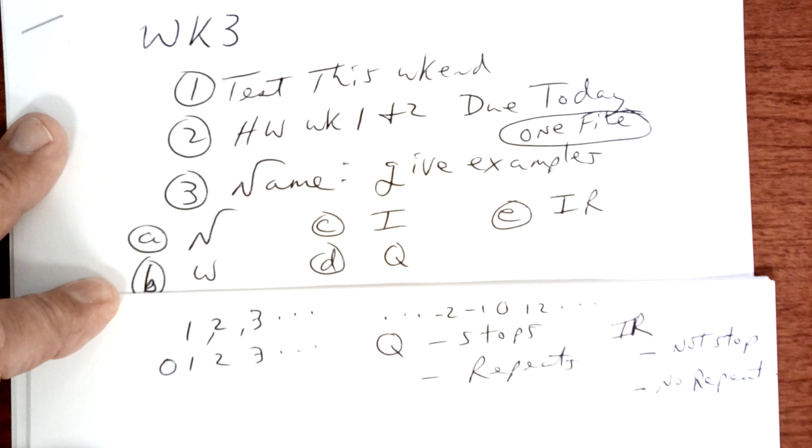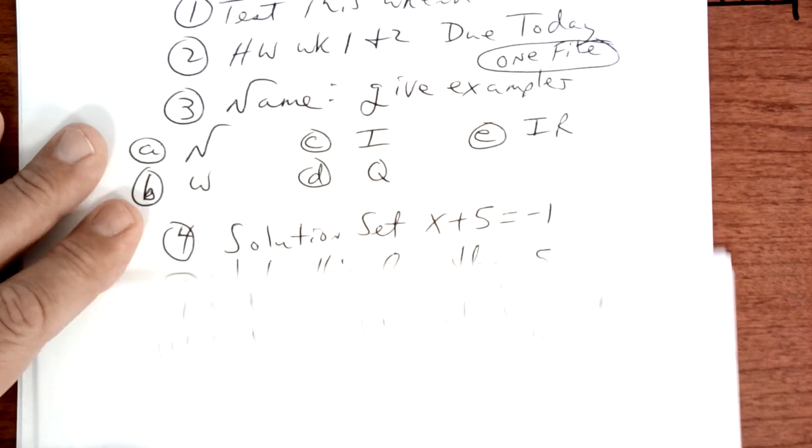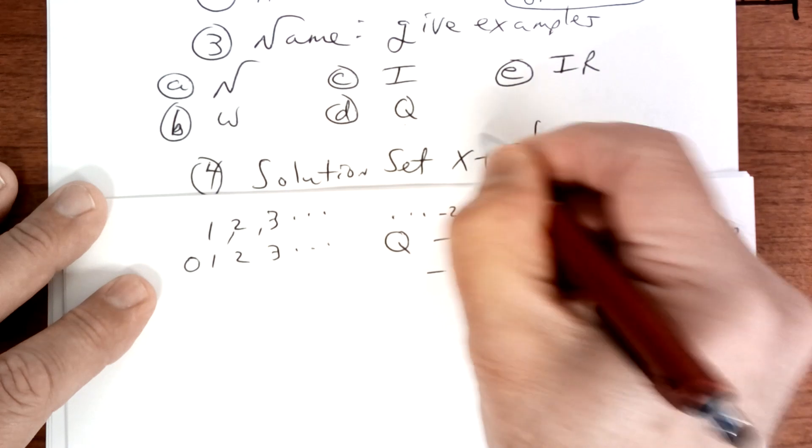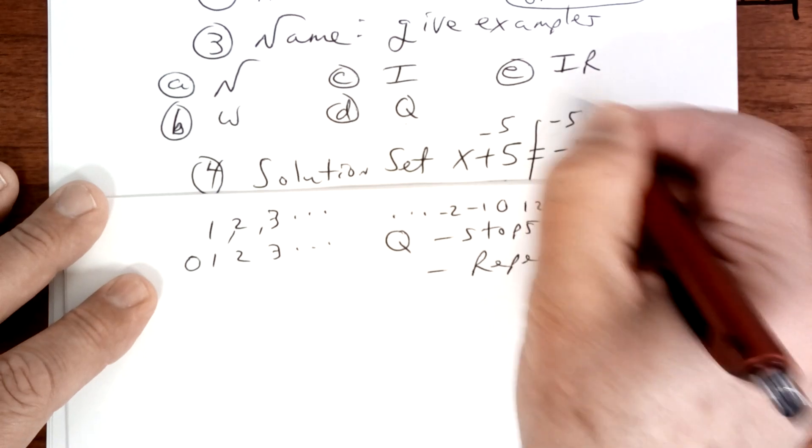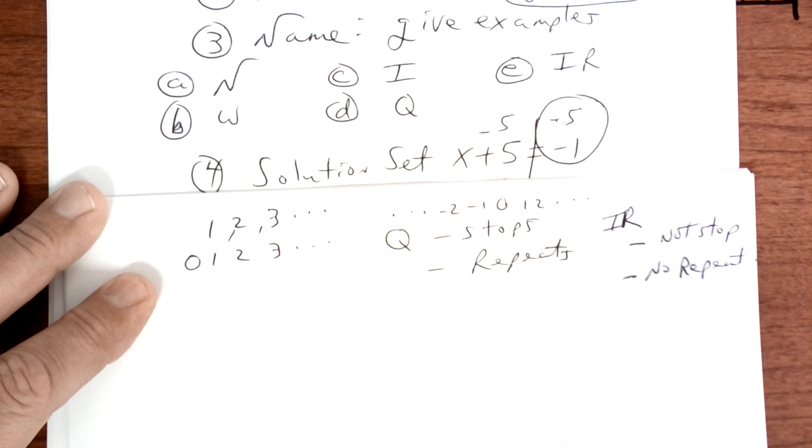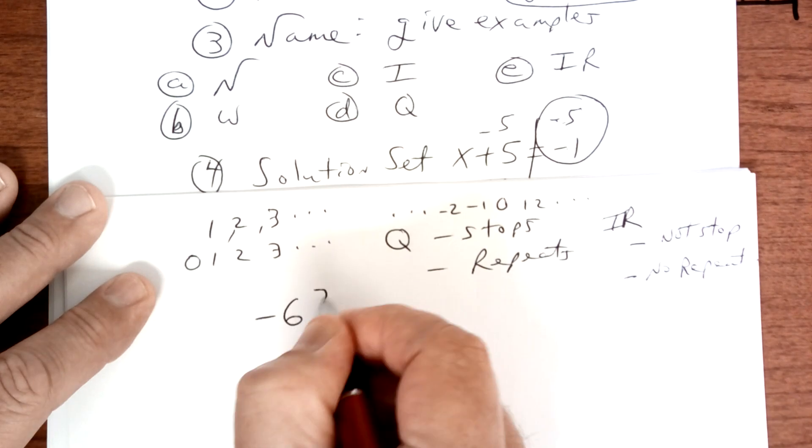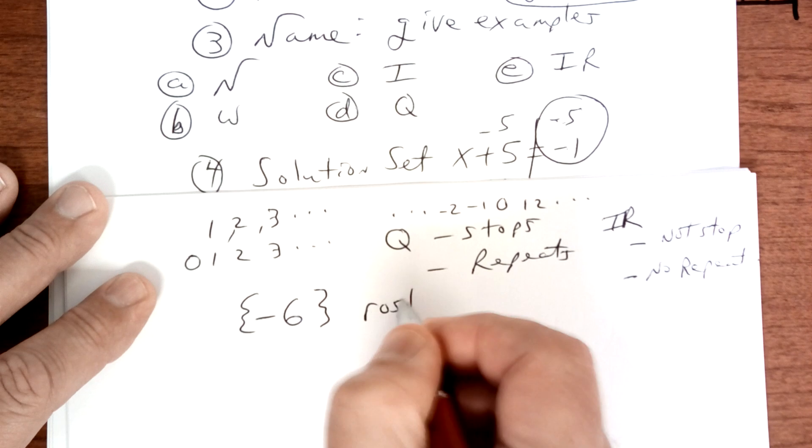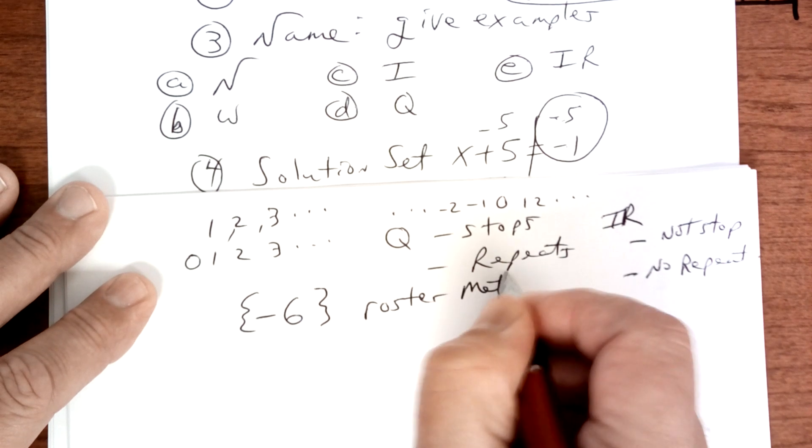Alright, let's go on. Solution set. Well, you have to solve this. So you would subtract five. Since these signs are the same, you get a negative six. And that's the only solution. And this is called the roster method. It's just terminology.